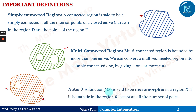A function f(z) is said to be meromorphic in a region R if it is analytic in the region R except at a finite number of poles. These are the important definitions which will be required in further sections.